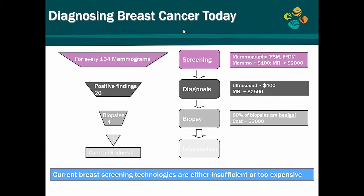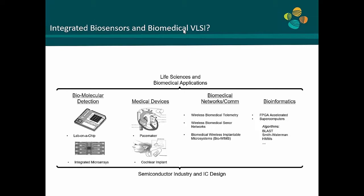The positives go from 134 to 20 to 4 until you find one which is actually cancerous. Looking at a higher level at the application side, what types of sensors are people actually working on in the biomedical field? First is biomolecular detection — basically detecting molecules. Think about glucose detection, think about biomarkers for cancer. These are lab-on-a-chip type applications.